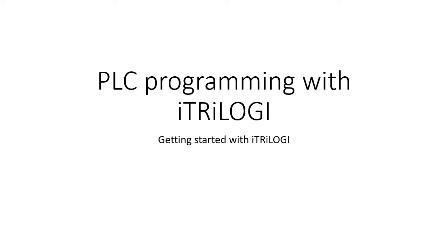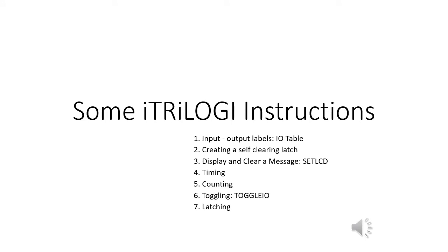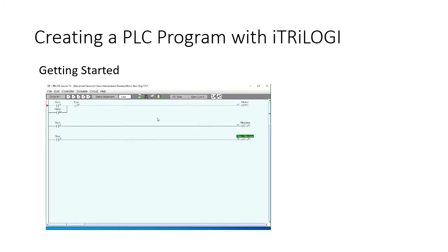PLC programming with i-trilogy: getting started. Here are a few key i-trilogy instructions: one, setting up input/output labels using the IO table; two, creating a self-clearing latch; three, displaying and clearing a message using the set LCD function; four, special custom function timing; five, counting and toggling using the toggle IO function and latching.